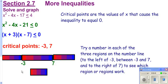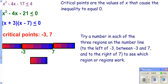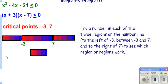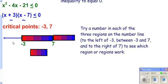One or two of those regions will work — we just have to figure out which ones. We try a number in each region. Let's try a number to the left of negative three — say negative four. Negative four plus one is negative; negative four minus seven is negative. A negative times a negative is positive, and a positive is not less than zero. So to the left of negative three, you're not going to shade.